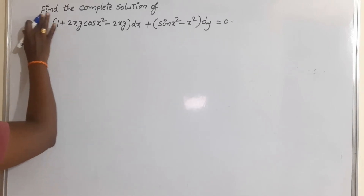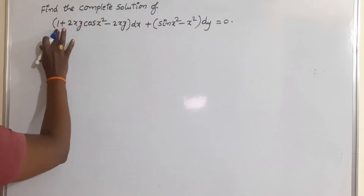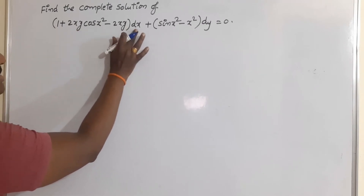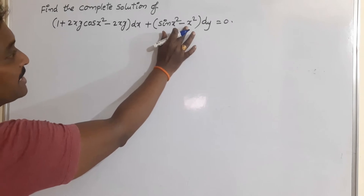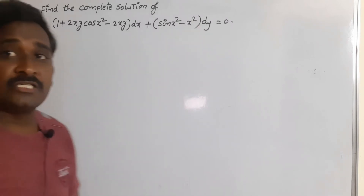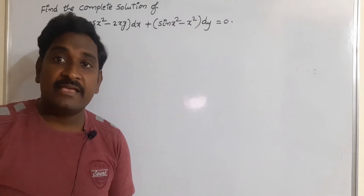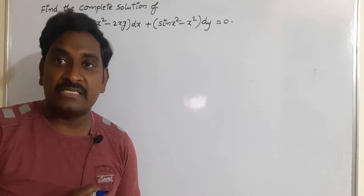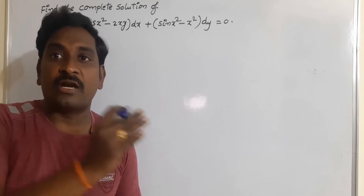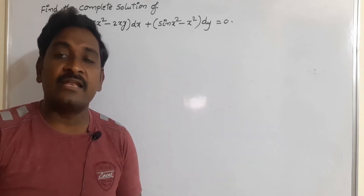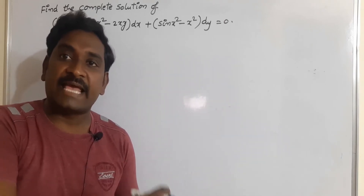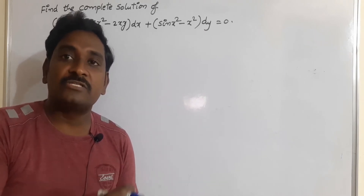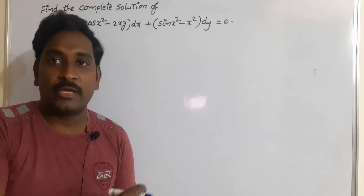See the next problem: find the complete solution of (1 + 2xy cos(x²) - 2xy) dx + (sin(x²) - x²) dy = 0. Clearly we are observing that the given differential equation is directly in the form of M dx + N dy = 0. So we should write what is M and what is N. First of all we have to check whether the given differential equation is exact or not. The condition for exactness is ∂M/∂y = ∂N/∂x.